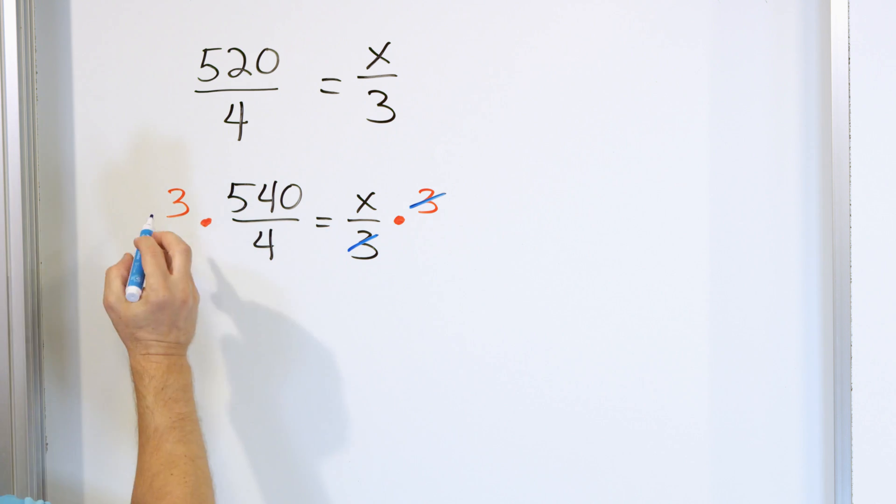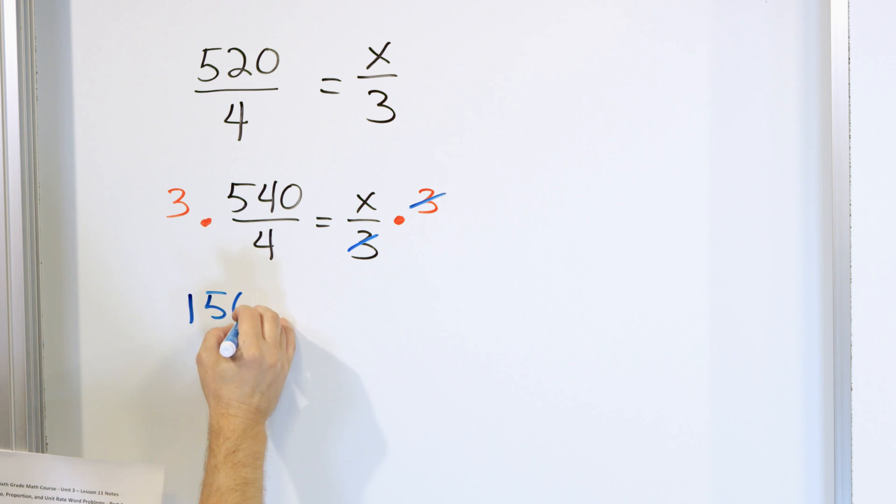Now on the left-hand side, we have 3 times 540. When you go off to the side and multiply 3 times 540, you will get 1,560. And you should be able to perform that multiplication. Now don't forget, again, it's invisible 3 over 1. So multiplying the bottoms, 4 times 1 is 4. And then the only thing we have left on the right is x.